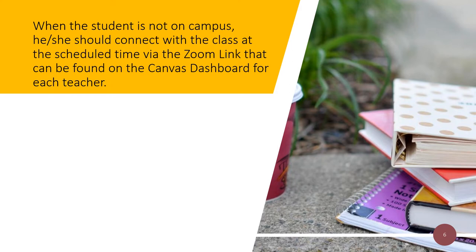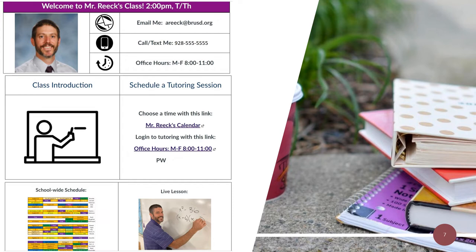Let's now look at what a student would do on his or her off-campus day. For this student named Adams, the off-campus days will be Tuesdays and Thursdays. On those off days, the student will follow the same schedule as Mondays and Wednesdays as if they were on campus, but will be attending class from home. Students will follow the in-person bell schedule and connect with each teacher through the established Zoom link on the teacher's Canvas dashboard. The teacher may also have asynchronous activities for the student to complete, meaning the assignment will be found in Canvas and can be worked on without direct guidance from the teacher.